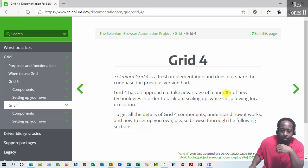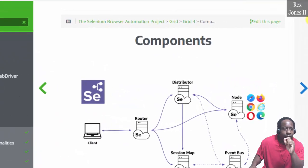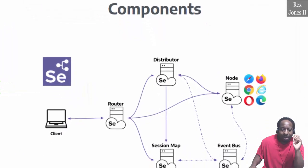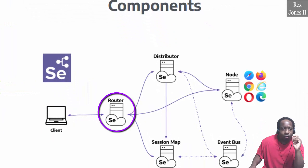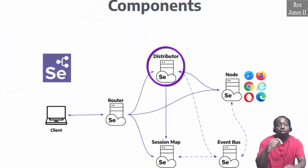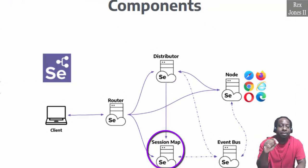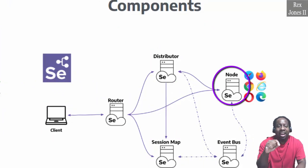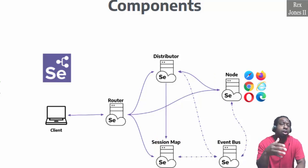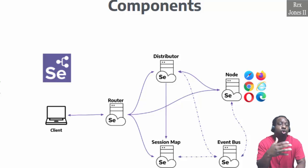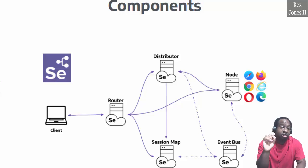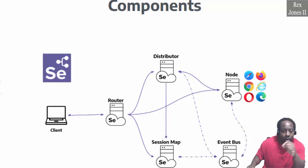Let's discuss the components and how the grid works. We have a client, router, distributor, session map, node, and event. Also, GraphQL has been added as a new way to query and get data. I'm going to get straight to the point and discuss these components.